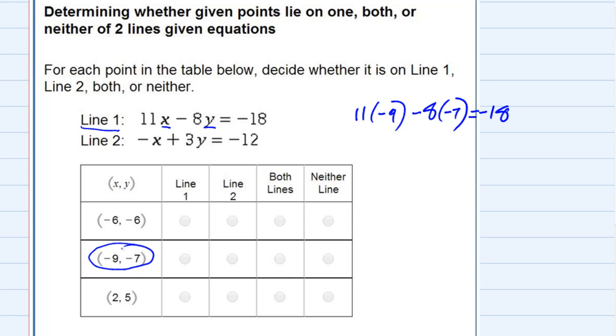And if we do the multiplication first, based on order of operations, that would be negative 99, and then minus 8 times negative 7 would be plus 56, equals negative 18. And then simplifying the left hand side, negative 99 plus 56 gives me negative 43, equals negative 18.